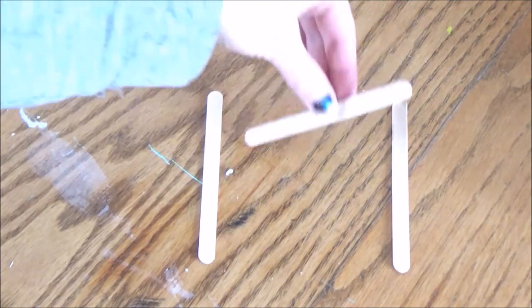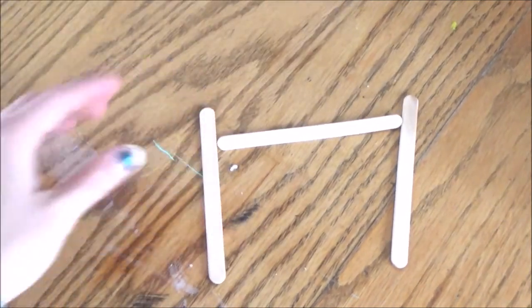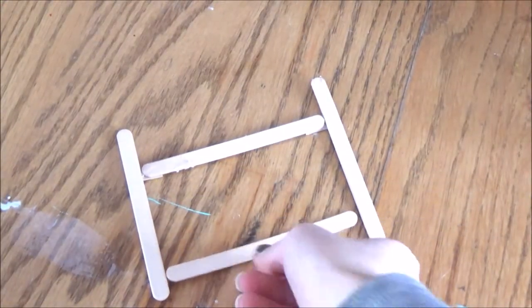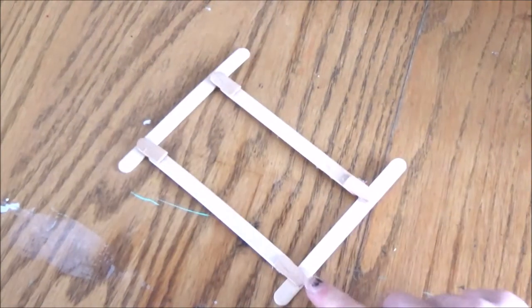Now we're going to make the gate for the front of the stall. So to do this glue some popsicle sticks together like I'm doing here and then I just cut some smaller pieces of popsicle stick to glue at the back to keep it all in place.